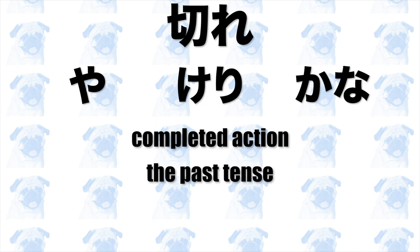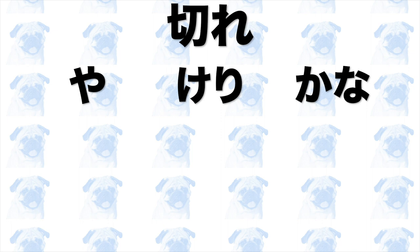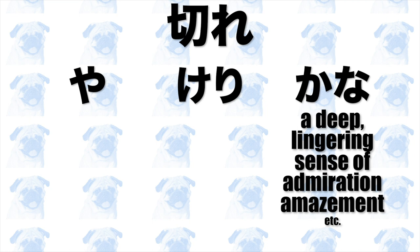Keri tends to appear at the end of a haiku — this is why the phrase keri wo tukeru means 'to put an end to something.' Kana is similar to ya in that it can follow a noun, verb, adjective, adjectival verb, or auxiliary verb, while it is similar to keri in that it appears at the end of a haiku. Kana expresses a deep, lingering sense of admiration or amazement. Be careful: kana in contemporary Japanese expresses question or curiosity, while kana in haiku does not.